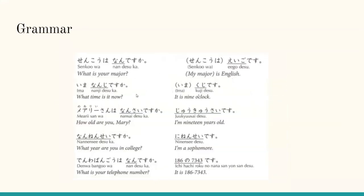These are some example questions, and these are some examples of answers to those questions. Senkou wa nan desu ka would mean what is your major? Senkou wa eigo desu would mean my major is English. Ima nanji desu ka would mean what time is it now? Ima kuji desu would mean it is 9 o'clock.